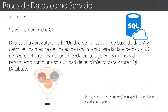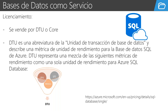Esto es súper importante. Cuando estamos trabajando con bases de datos y las vayamos a cotizar, vamos a encontrar una gran diferencial entre estimar algo por core — es decir, por el núcleo — o estimarlo por DTU. El DTU es una medida que combina CPU, memoria y el input/output, las transacciones de entrada y salida que una base de datos puede manejar. No hay forma de comparar manzanas con manzanas: no existe que 10 DTU equivalgan a un core.